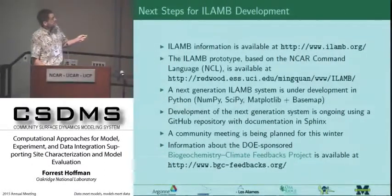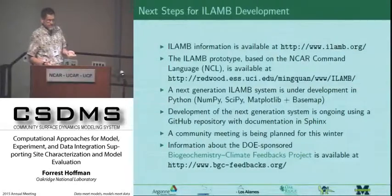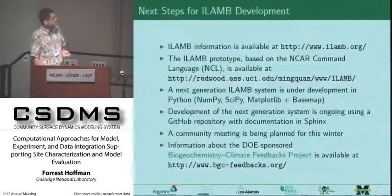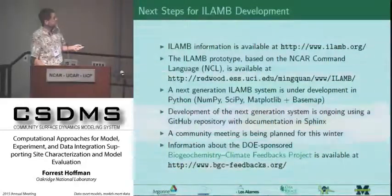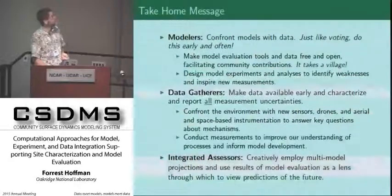More information about ILAMB is available on its website. The information about the current tool, which is written in NCL — NCAR Command Language — is available there. We're in the middle of developing a next-generation version of this based on Python with all of these libraries. We're going to do open development within a GitHub repository — it's already out there, the documentation is going into Sphinx, and we're going to have a meeting later this winter. More information about our project and some of the science we're doing to develop these new benchmarks and measure the performance of the models is also available there.